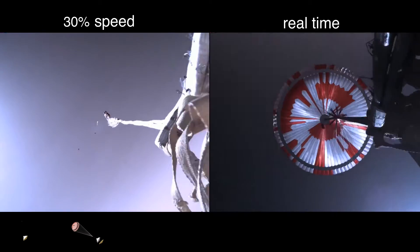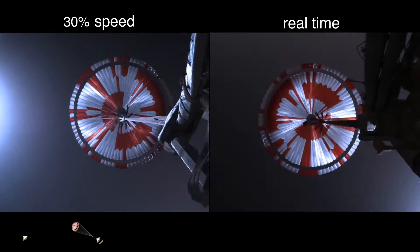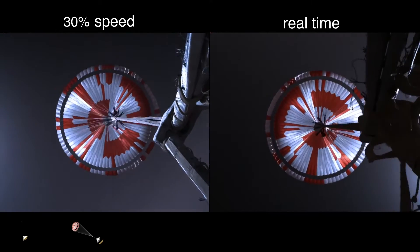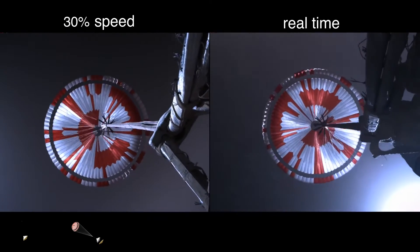Telemetry indicates chute deployed. The navigation has confirmed that the parachute has deployed, and we are seeing significant deceleration in the velocity. Our current velocity is 440 meters per second, at an altitude of about 12 kilometers from the surface of Mars.